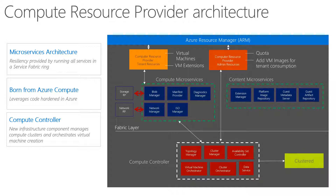Under the covers, all of these compute microservices communicate with the compute controller. The compute controller consists of things like the topology manager, cluster manager, and so on. These services translate the commands into commands for the underlying components — like, for example, failover cluster manager, Hyper-V, Storage Spaces Direct, and all the things we use today to implement all these services.